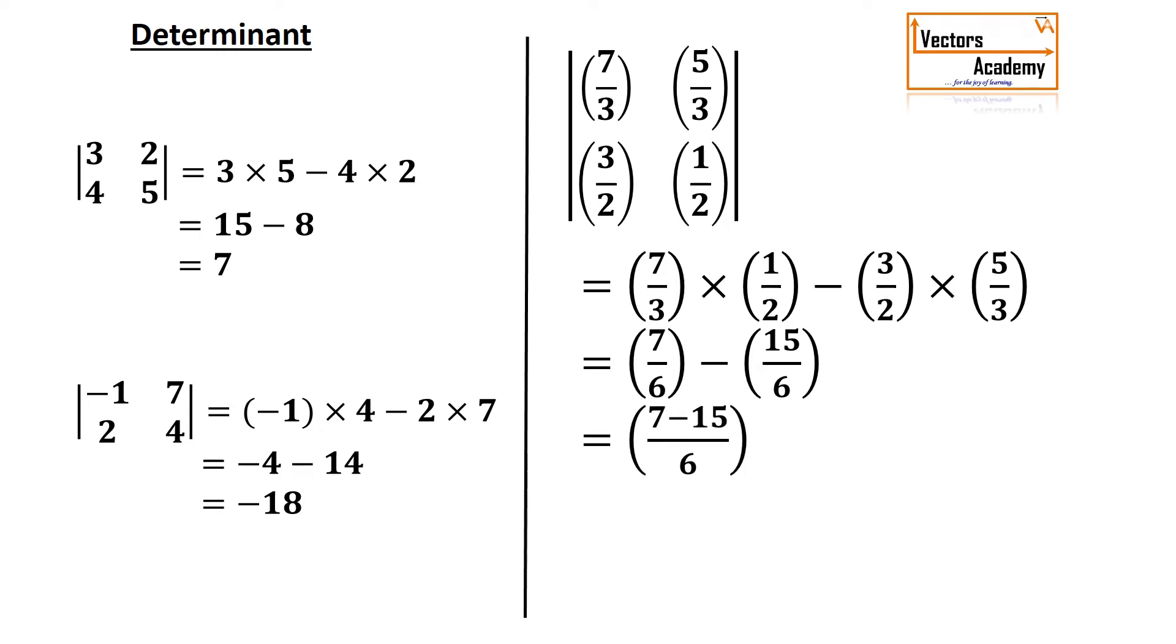Now we have two fractions we need to subtract them. As the denominator is already same we just need to subtract the numerators. That is 7 minus 15 upon 6 will get minus 8 by 6. So this is how to solve a determinant.